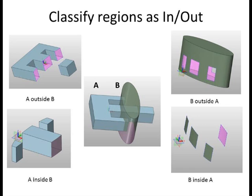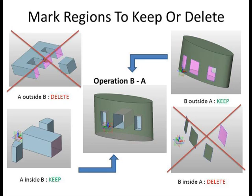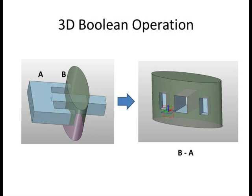Now to perform our Boolean operation B minus A, recall that we want to keep those regions of B outside A and the regions of A inside B. We can throw away the regions in the other two categories. Sewing the kept regions together results in the desired boundary for the shape B minus A.